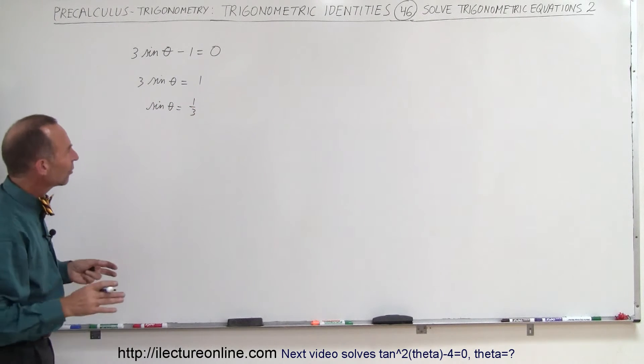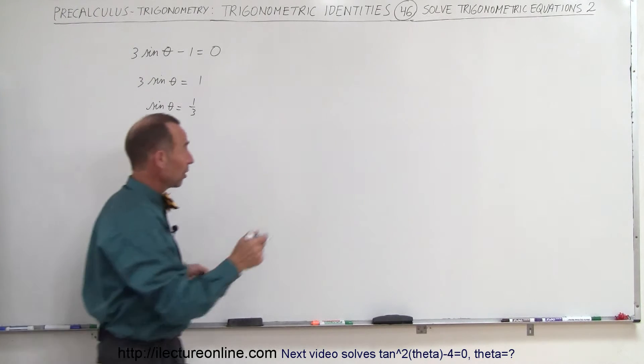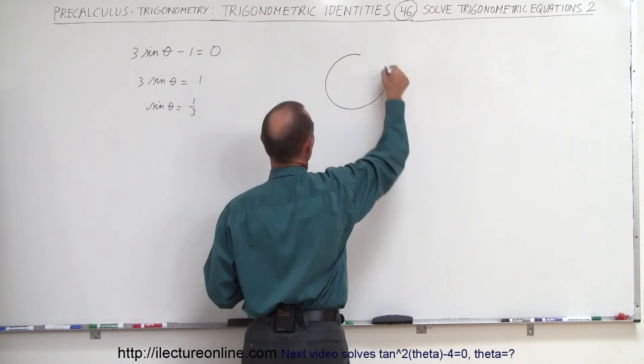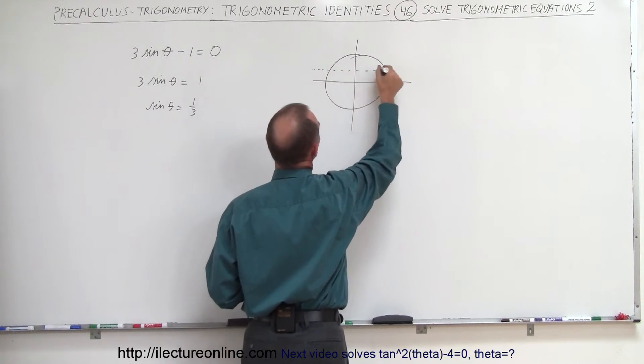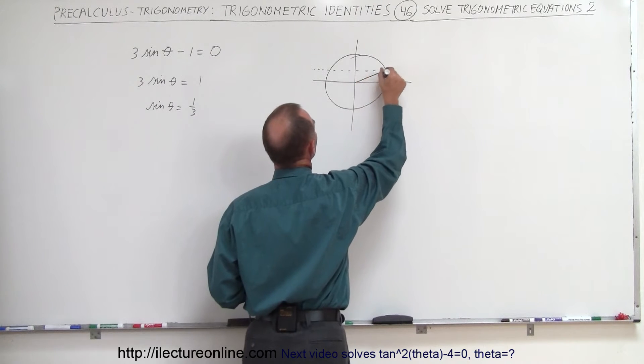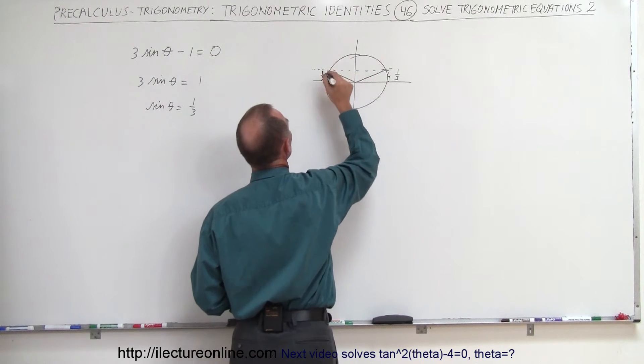Alright so for what values of theta can the sine of that angle be 1 third? If we draw the unit circle it becomes fairly apparent 1 third would be in this range right here. This here would be 1 third and over there this way would be 1 third.